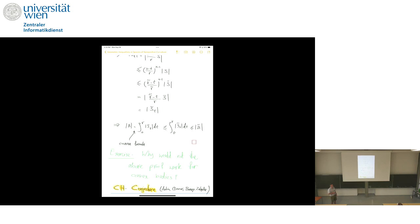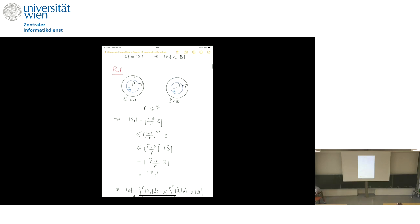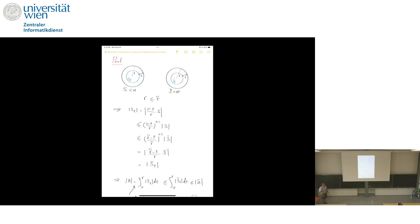Here is a good exercise: why wouldn't this proof work for convex bodies? The key is that when you have a sphere and you move in by distance t, it's the same as scaling. But for a general convex body, that wouldn't work. So the proof is specific to spheres because of their scaling property under the exponential map.